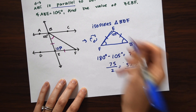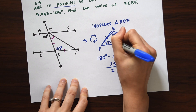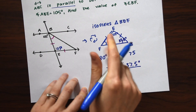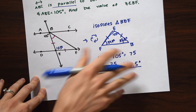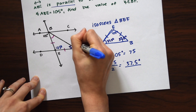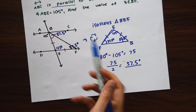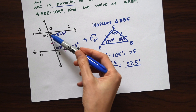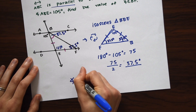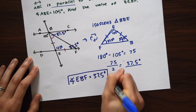So 37.5 degrees is our answer. Let's fill that back in on our diagram — we'd have 37.5 degrees on one side of the triangle and 37.5 degrees on the other. The angle we wanted to find originally was angle EBF, marked in pink, and we have our answer: angle EBF is equal to 37.5 degrees.